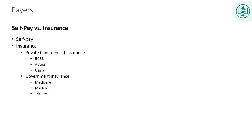Examples of commercial plans include Blue Cross Blue Shield, Aetna, Cigna, United Healthcare, and many others. Some commercial plans also offer Medicare Advantage plans, which cover seniors and Medicare enrollees. Governmental insurers include Medicare, Medicaid, and TRICARE.